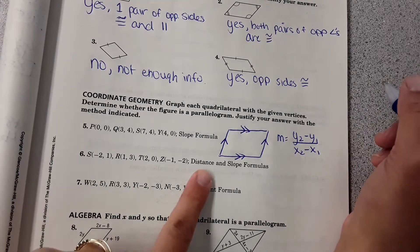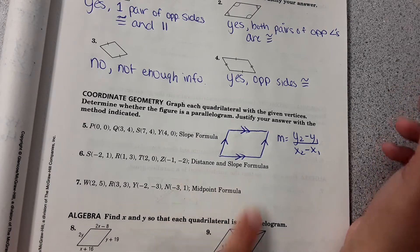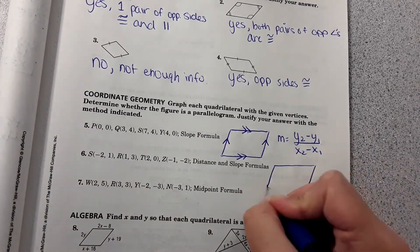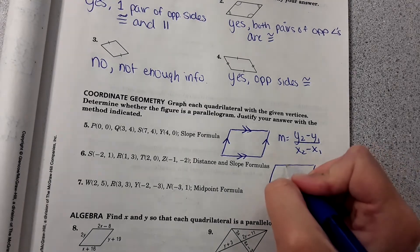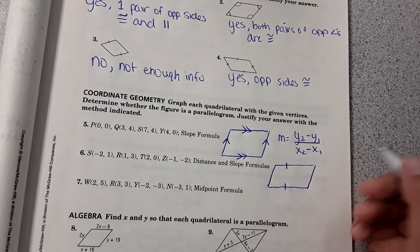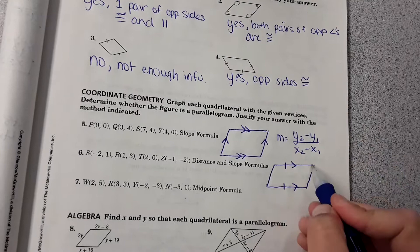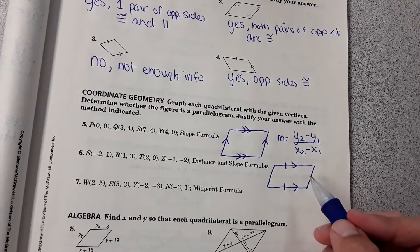Then, 6 says it wants you to prove this is a parallelogram with distance and slope formulas. So you would graph the parallelogram. Distance and slope formulas. So if one set of opposite sides are congruent and they have the same slope, then it is a parallelogram. So you would have to find the length of a set of opposite sides and find its slope to determine that.